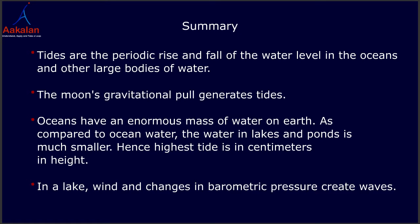To summarize: tides are the periodic rise and fall of the water level in the oceans and other large bodies of water. The moon's gravitational pull generates tides. Oceans have an enormous mass of water on earth. As compared to ocean water, the water in lakes and ponds is much smaller, hence the highest tide in a lake is only centimeters in height. In lakes, wind and changes in barometric pressure create waves.